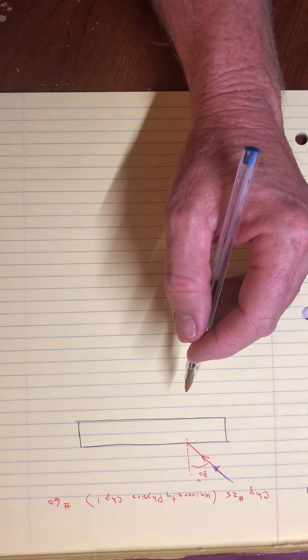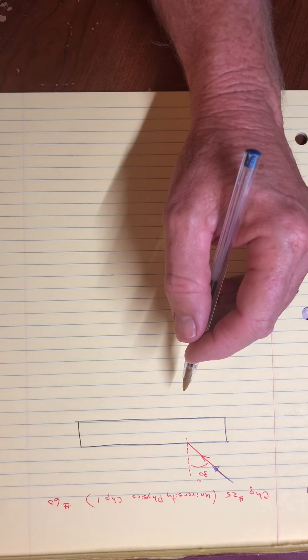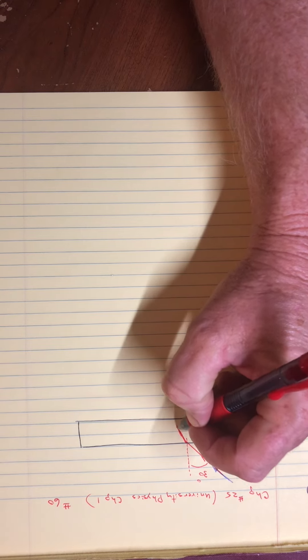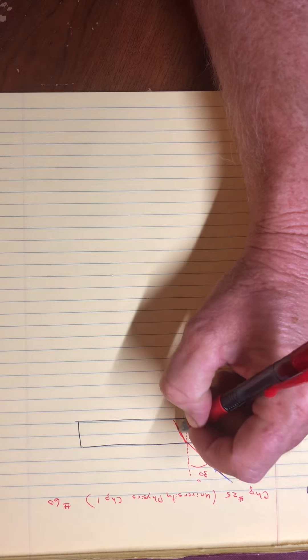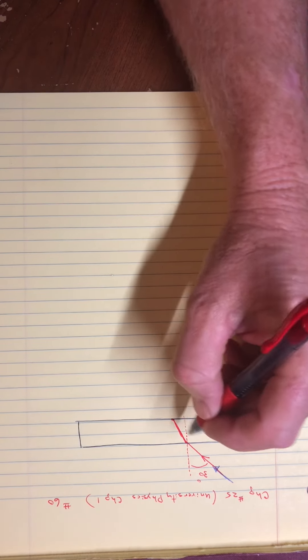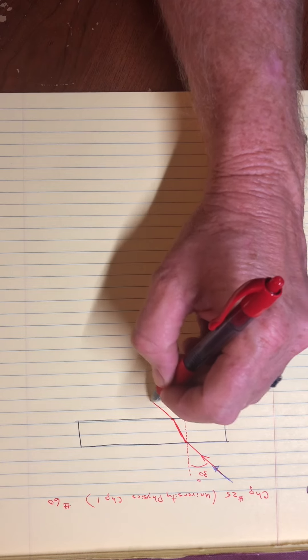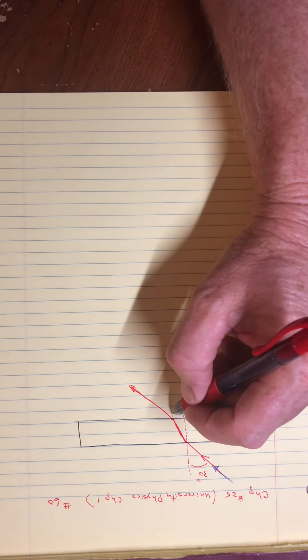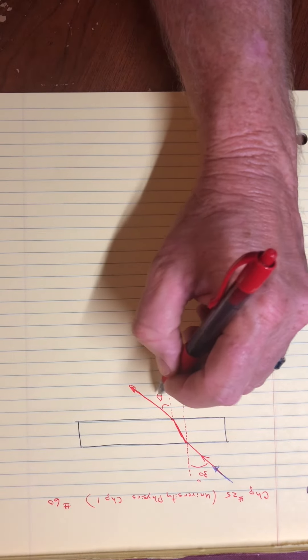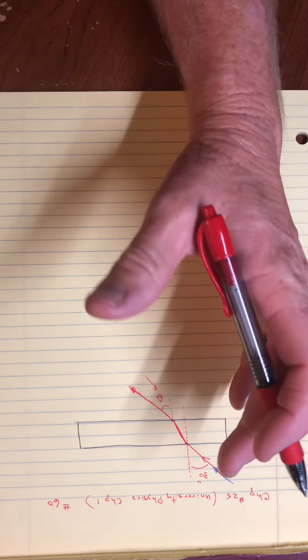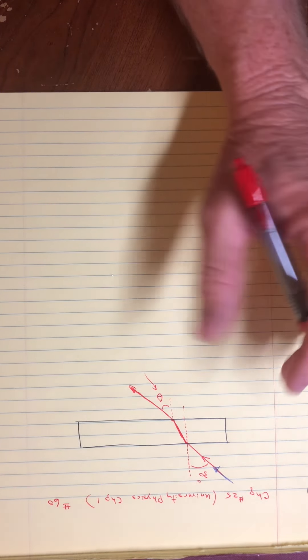Part A asks at what angle do the colors emerge. Let's talk about one color at a time — I'll do the red. The red is going to refract and bend towards the normal. The blue will too, but let me draw the red one. Then when the red one exits, it's going to bend or refract again, this time away from the normal. The question is: what is this angle when it exits?